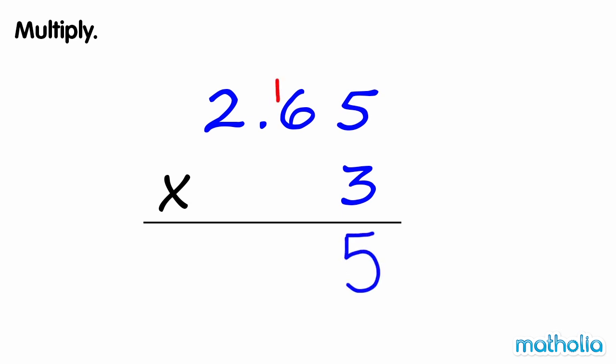Now multiply the tenths. 3 times 6 tenths equals 18 tenths. 18 tenths plus 1 tenth equals 19 tenths. Regroup 19 tenths into 9 tenths and 1 one.